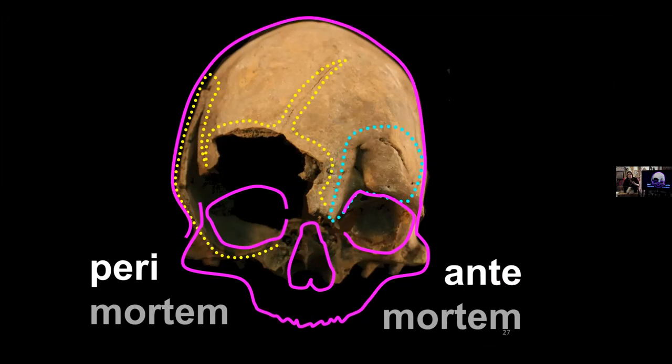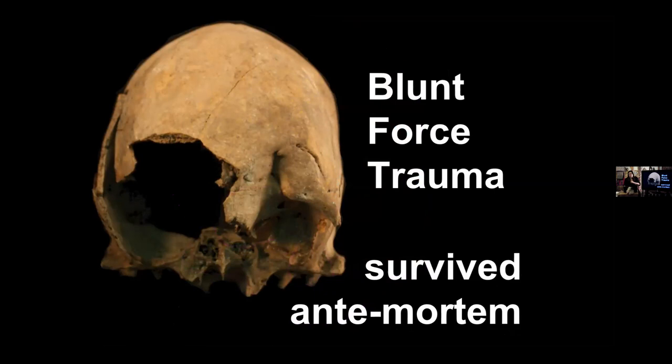I want to contrast that with peri-mortem trauma. Peri-mortem trauma is an injury or wound that occurs at or around the time of death and may be related to the cause of death. In this case, it's clear that this particular individual survived one hit to the skull, and then a few years later suffered a devastating injury that literally took off half this individual's face.